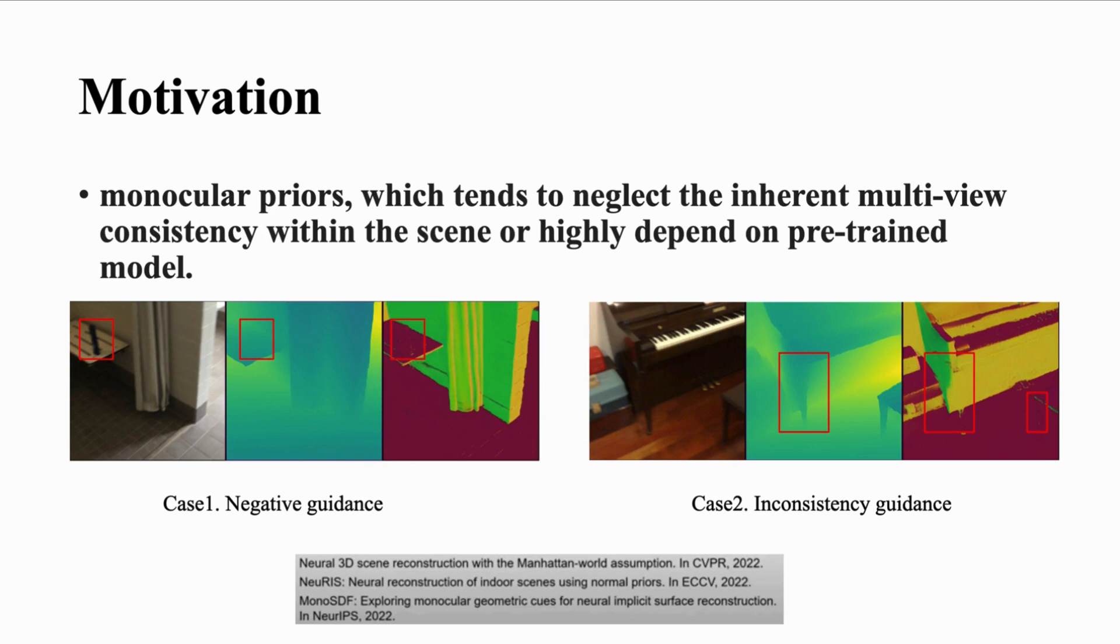The current state-of-the-art methods utilize geometric priors such as normal maps and depth maps to further guide the model. However, these methods use monocular cues, which means they either tend to neglect the inherent multi-view consistency or highly depend on the model's performance.